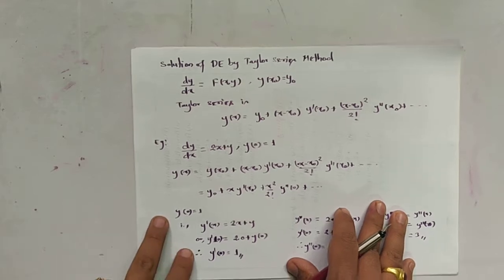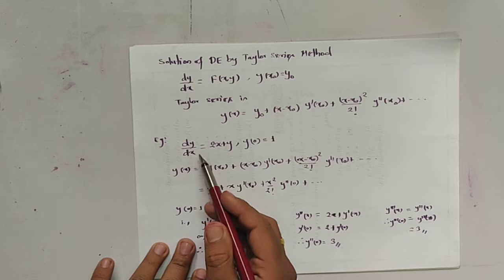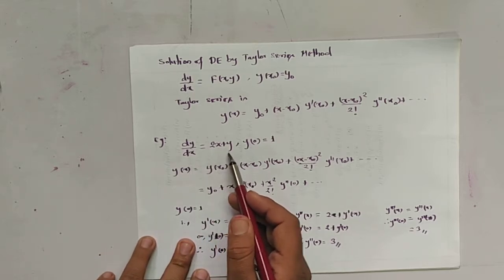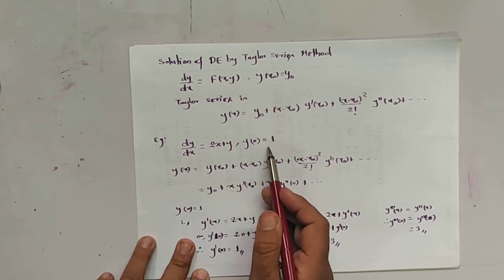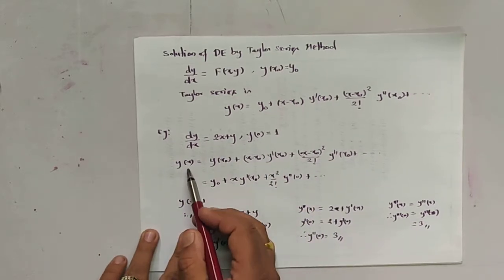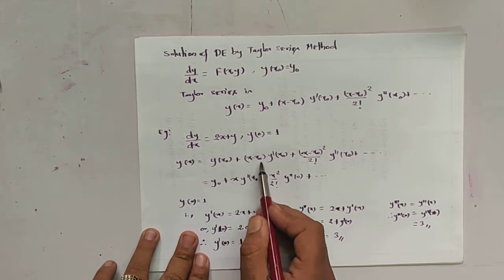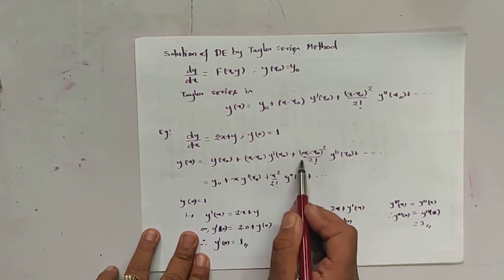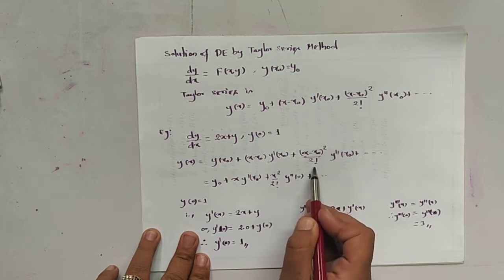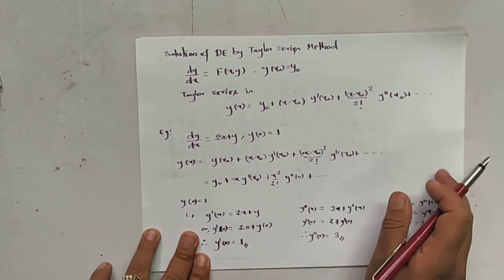Let us consider an example: dy/dx = 2x + y, where y(0) = 1. By the Taylor series, we can expand y(x) as y(x₀) + (x − x₀)y'(x₀) + (x − x₀)²/2! · y''(x₀) + ···